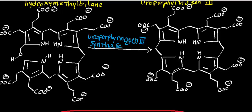Welcome back to the playlist on heme synthesis and cytochrome P450. In this video, we're going to look at this enzyme, which is called uroporphyrinogen 3 synthase. What it's going to do is take hydroxymethylbilane and convert it into uroporphyrinogen 3. We'll analyze the structures in just a few minutes, but first I want to give you some background information on this enzyme.